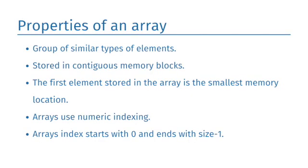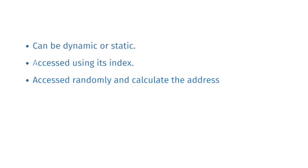Let us see the properties of array. Array contains a group of similar type of elements. Array elements are stored in contiguous memory blocks. The first element stored in the array is the smallest memory location. Arrays use numeric indexing. Array's index starts with 0 and ends with minus 1. Size of array can be dynamic or static. Element of an array can be accessed using its index. Elements of the array are accessed randomly and calculate the address of each element using the base address and the size of given data element.